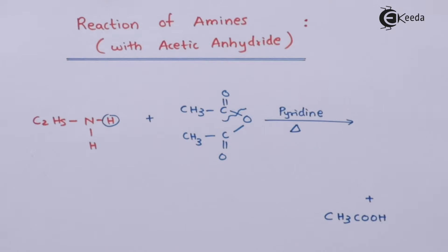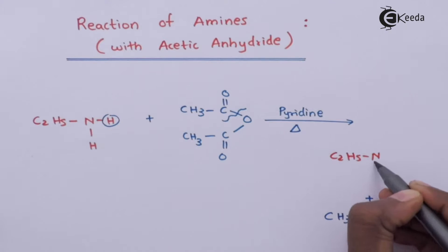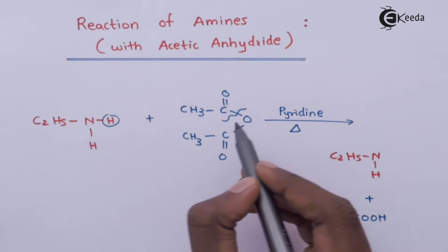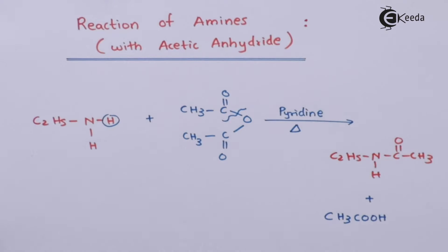And the main product that we need is C2H5NH. This will get attached here, C double bond OCH3. So this is the product that we have got, and the name of the product, as we did in our previous lecture, is N-ethyl-ethanamide.